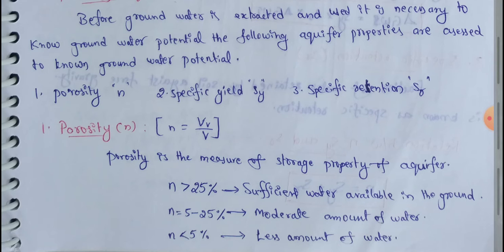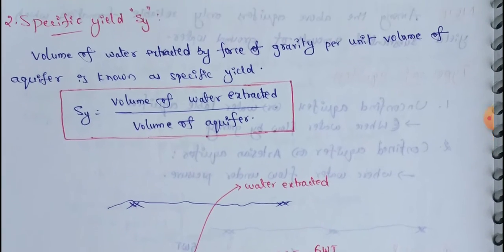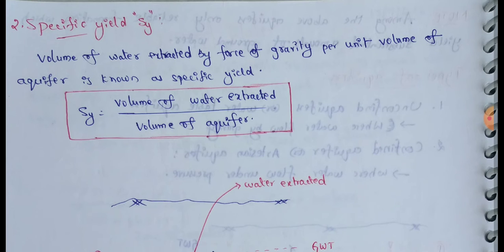When porosity is less, the amount of water is much less. The water storage capacity is much less. Next one: specific yield, Sy.